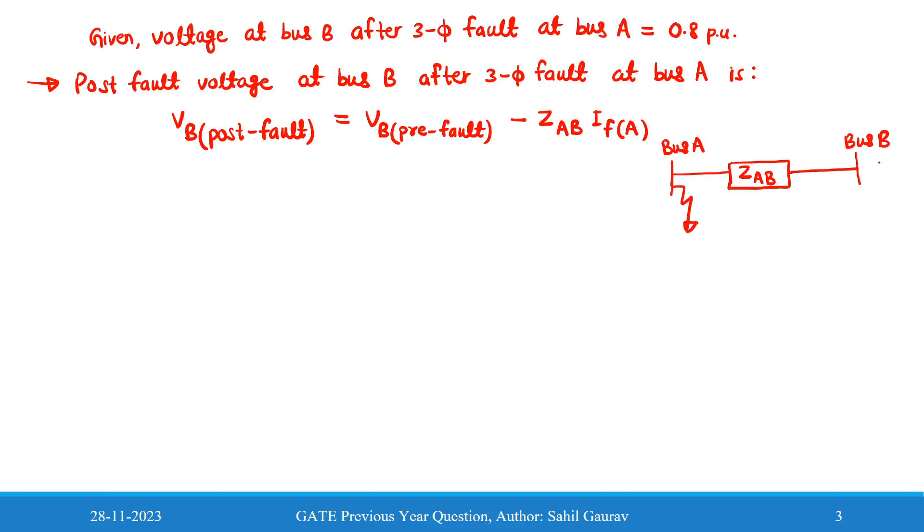And we are finding the voltage at bus B, so this current will flow through like in this manner, fault current A. So just we apply KVL and we will get the post-fault voltage at bus B.